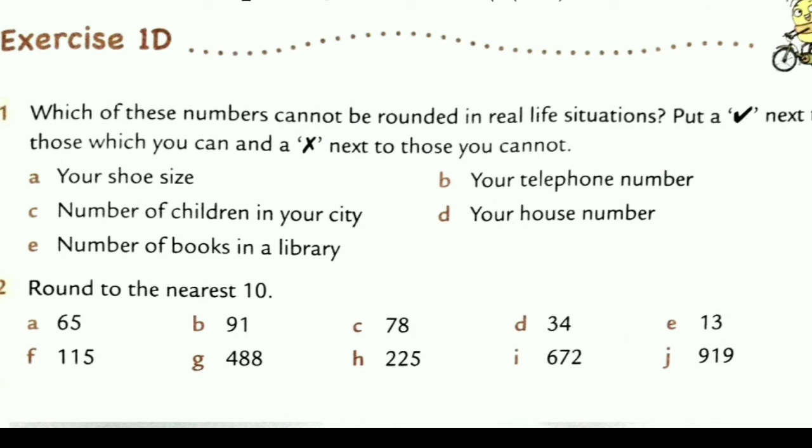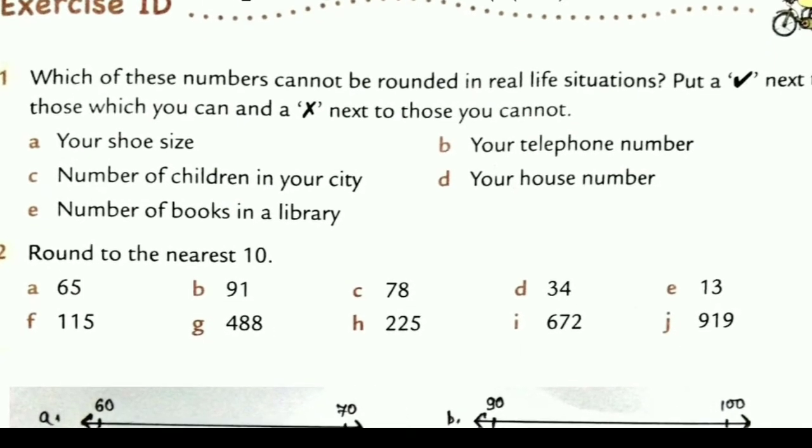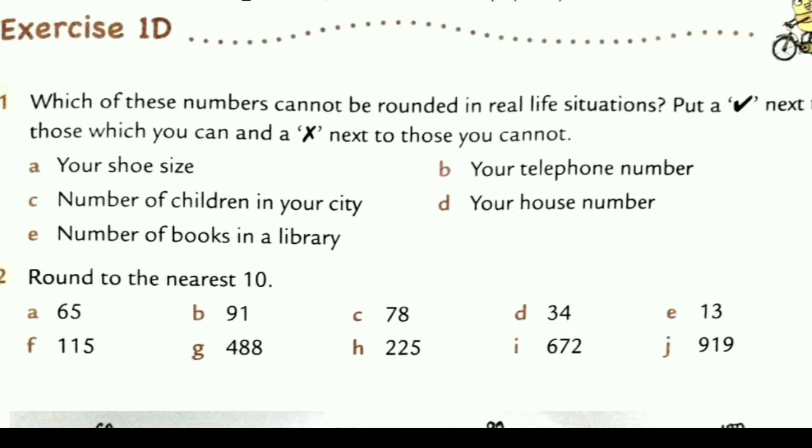Next, Exercise 1D. Which of these numbers cannot be rounded in real life situations? Put a tick next to those which you can and a cross next to those you cannot. Your shoe size - we cannot round off. Telephone number - we cannot round off. Number of children in your city - this we can round off. Approximate answer we can give. Your house number - we cannot round off. Number of books in a library - yes, approximate answer we can tell.